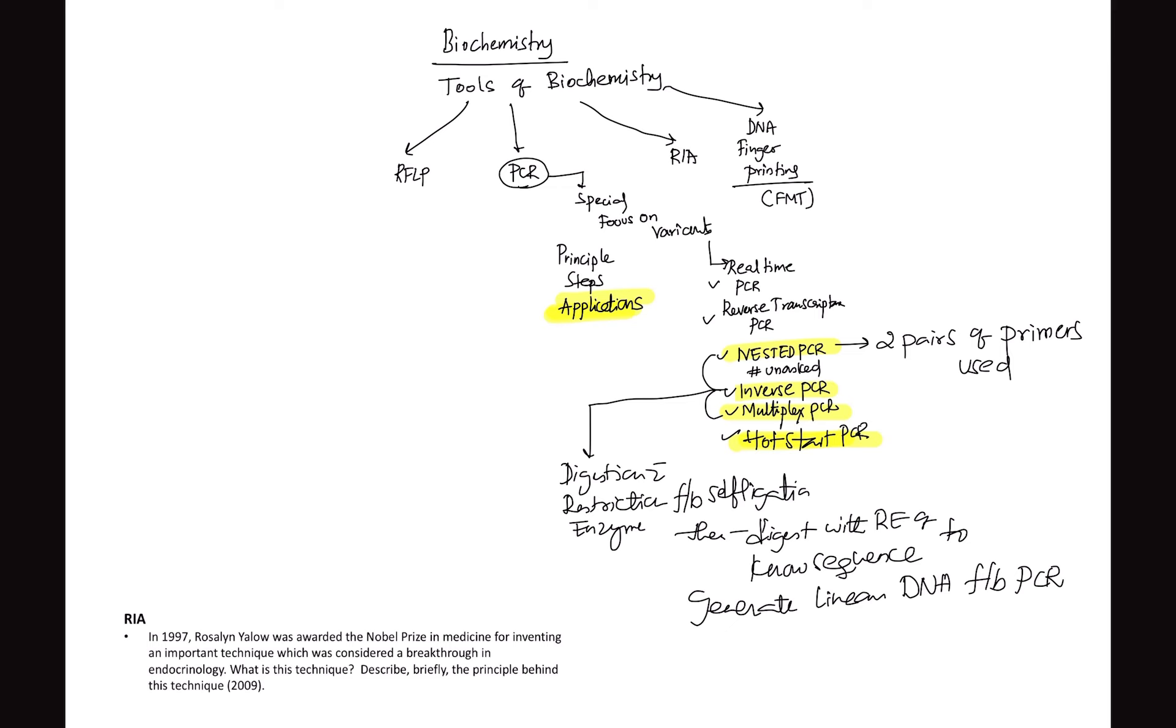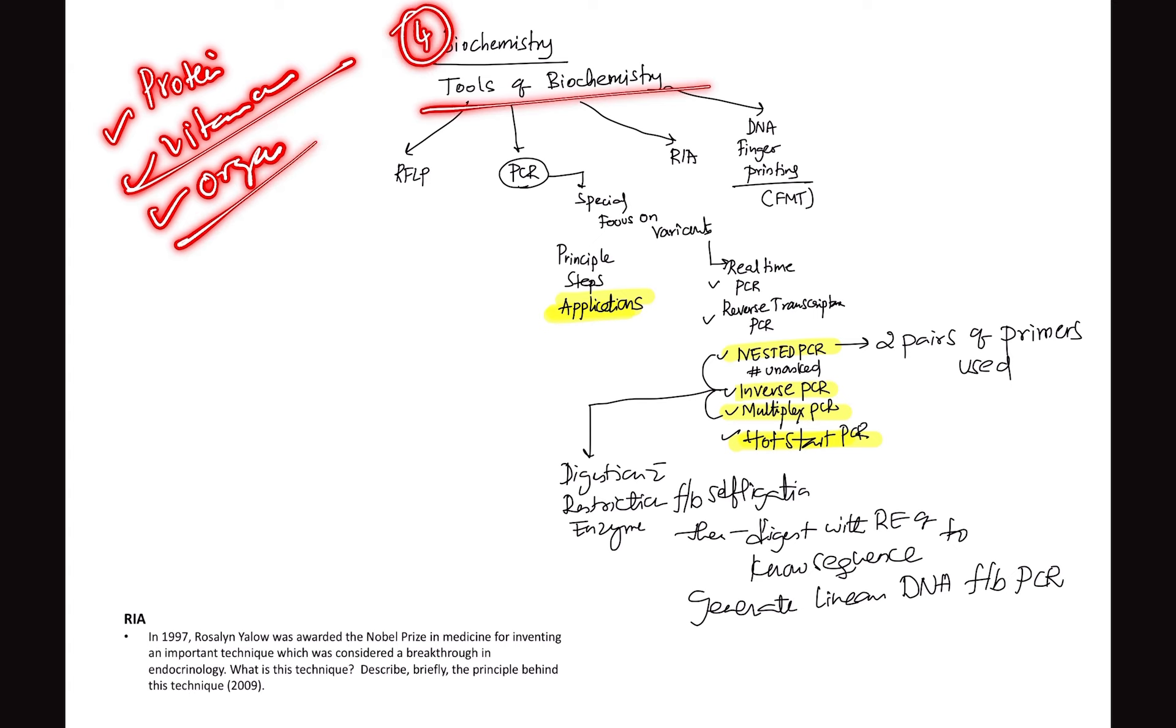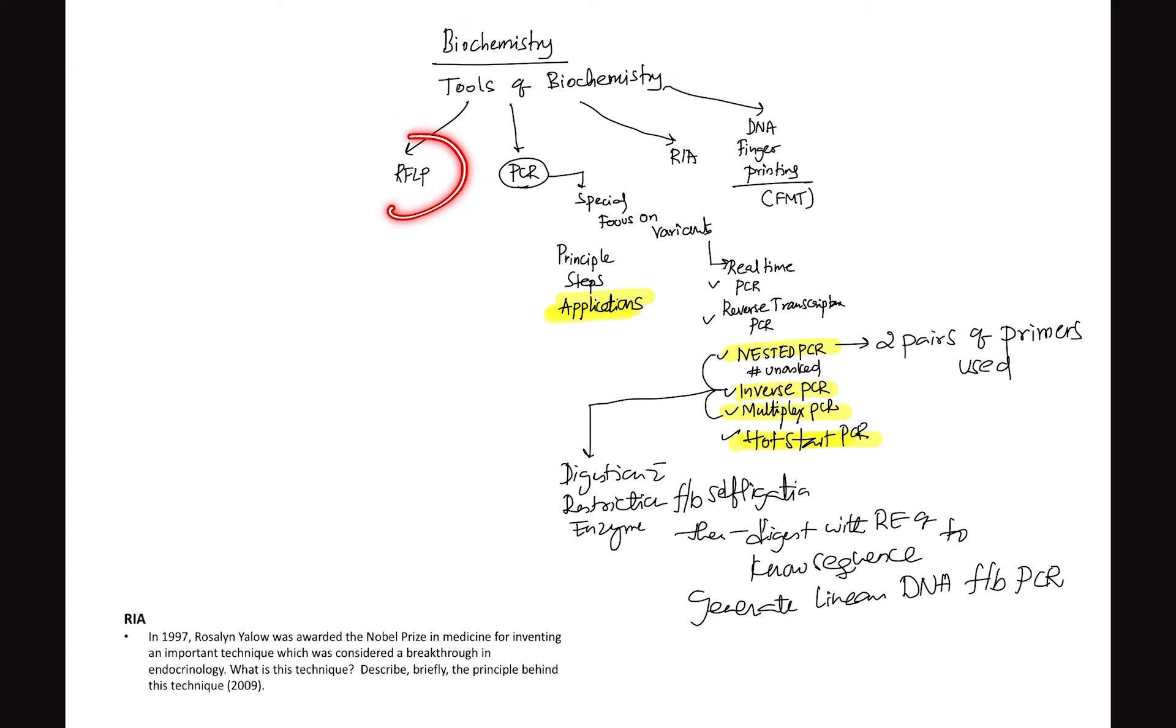We're starting with biochemistry. When it's biochemistry, there are four topics. One is protein synthesis. Other is vitamins and minerals. Other is organ function test. And the fourth thing is the tools of biochemistry. There are three tools: restriction fragment length polymorphism, PCR, radioimmunoassay. The fourth thing is actually a forensic medicine topic, DNA fingerprinting. They're asking a lot of questions on DNA fingerprinting principles.